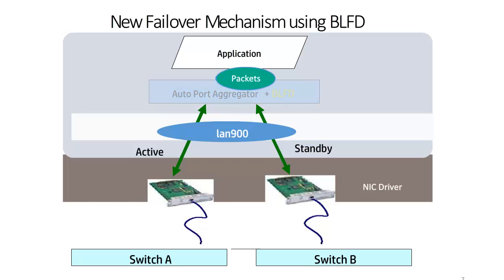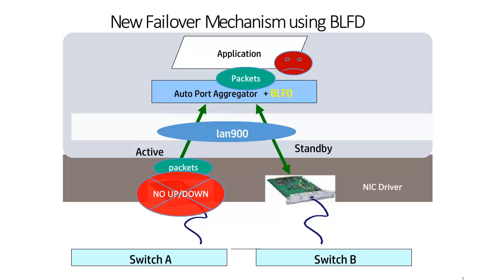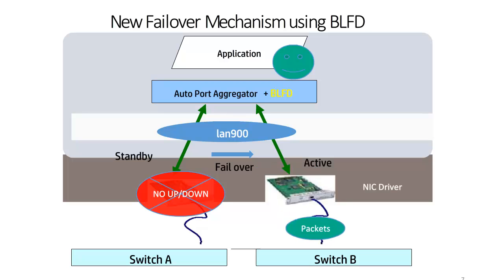To overcome that limitation, HP APA came up with a solution called Better Link Failure Detection, also known as BLFD, which is introduced to identify such failures and help HP APA to do failover automatically. With this new feature there won't be any loss of network connectivity. In the upcoming slides we will see a live demo on HP APA behavior with and without the BLFD feature.